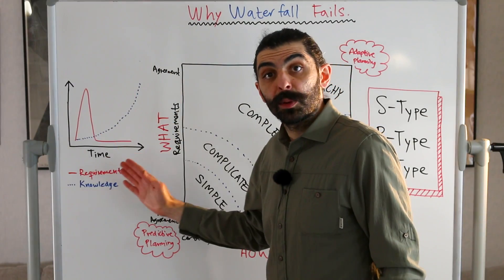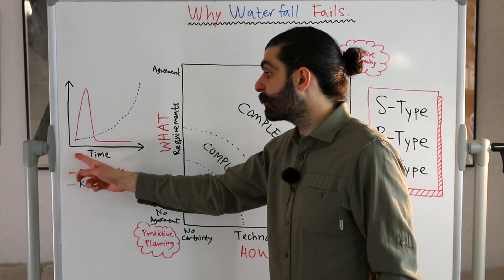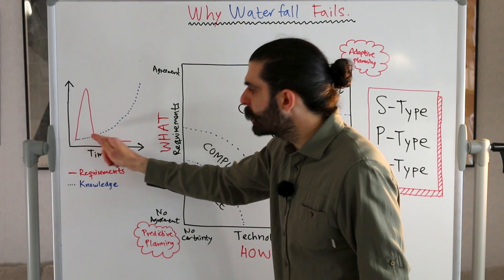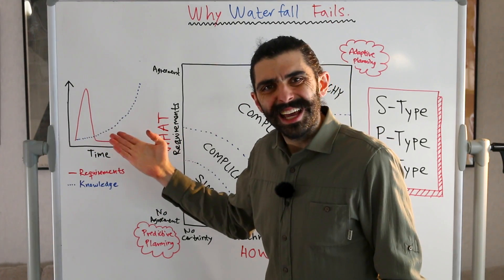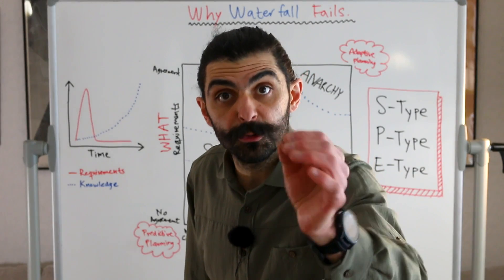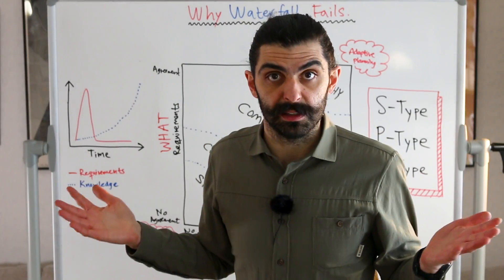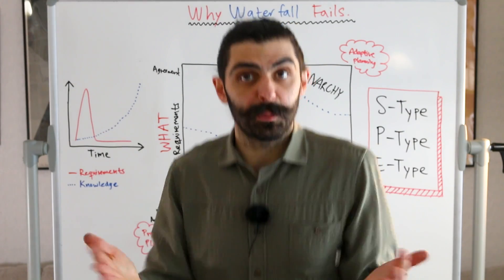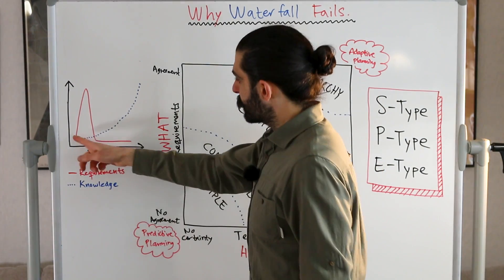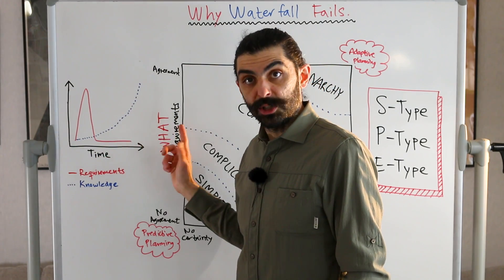Let's first look at this simple graph. On the x-axis we have time, and on the y-axis we have either requirements — this red line — or knowledge — this blue dotted line. This says that in the beginning of the project, when we're following the waterfall method, we specify almost all of the requirements. In an ideal world, we would specify all of the requirements. So we specify all requirements in the beginning, and then none for the rest of the project.